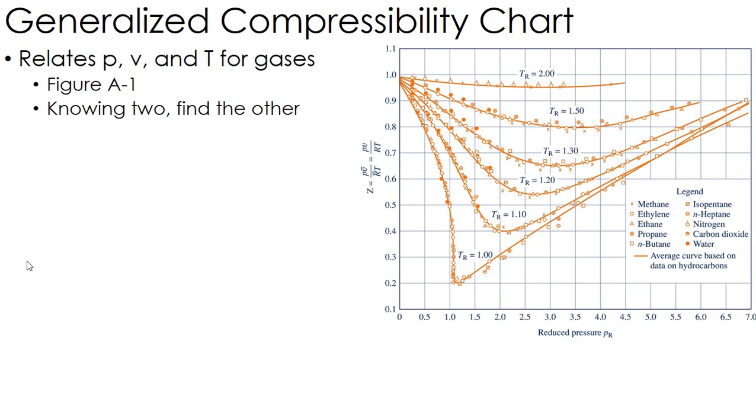And again, this is specific to gases as opposed to the vapor, the liquid vapor tables that we've been dealing with previously. This is strictly what we use for gases. Now, let's talk a little bit about what we see on the chart.